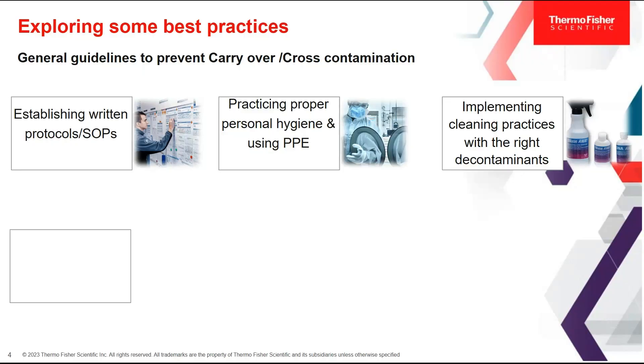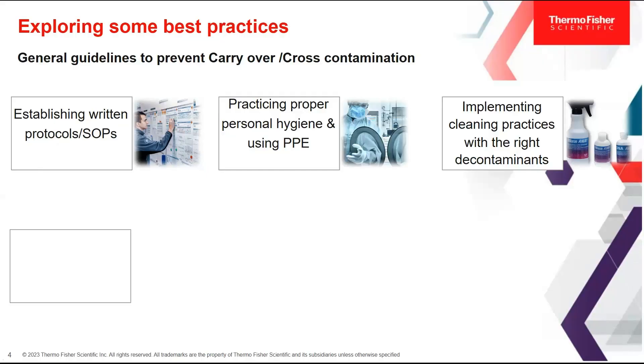Next, practicing proper personal hygiene — such as washing hands, wearing clean lab coats, using gloves correctly, wearing face shields and masks, avoiding touching of the hair, face, and mouth during the experiment, and frequent changing of gloves when handling multiple samples. Another important thing is to implement stringent cleaning practices, such as regularly cleaning work surfaces, equipment, pipettes, and other tools with appropriate decontamination solutions. These can be enzymatic decontaminants like RNase or DNase Away, UV radiation, or even 70% IPA.